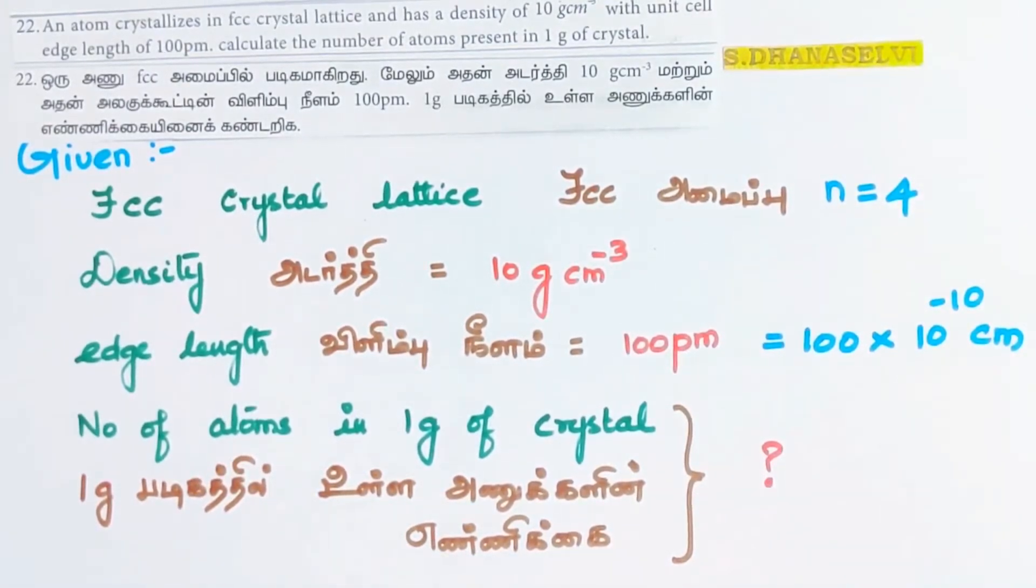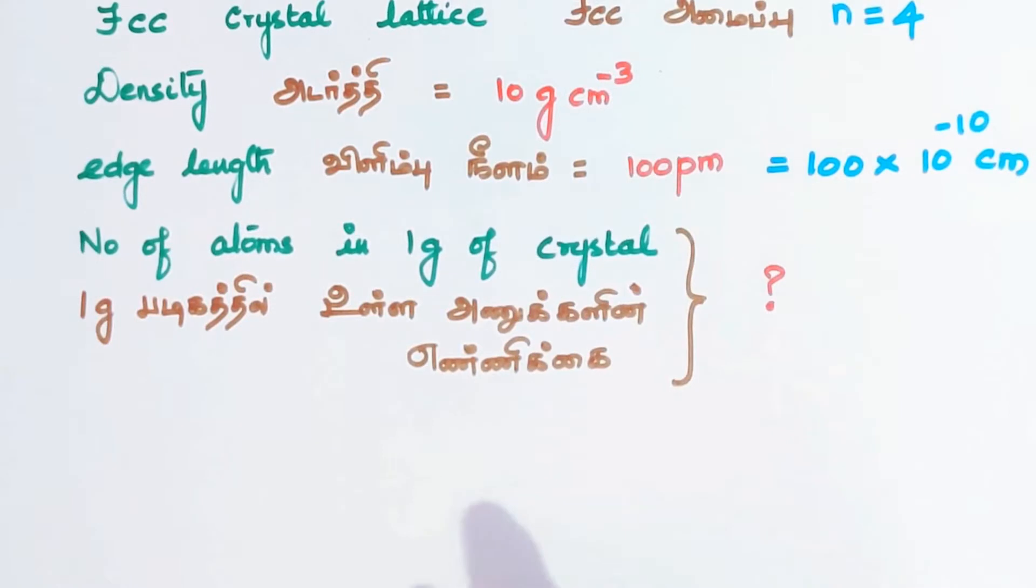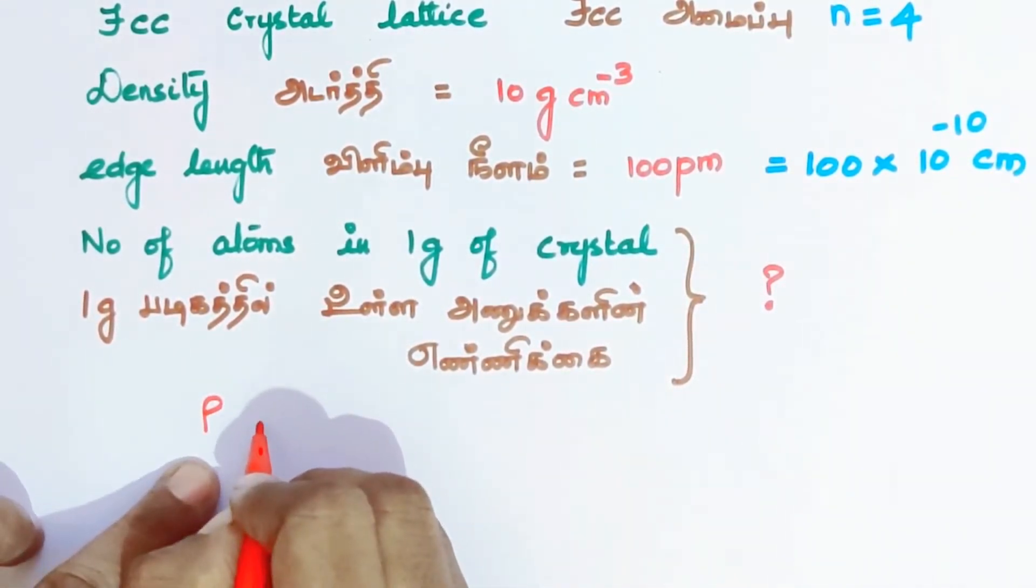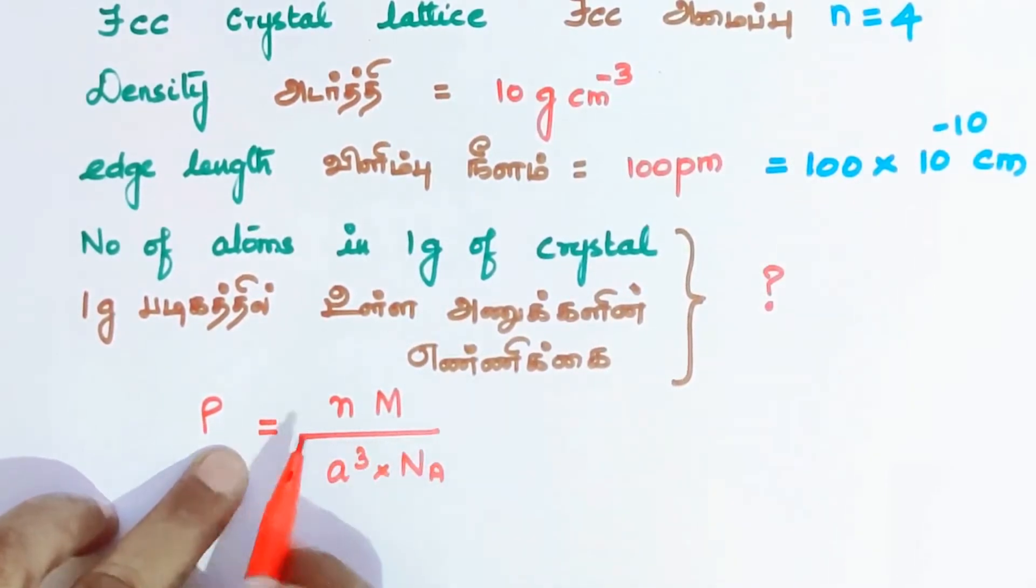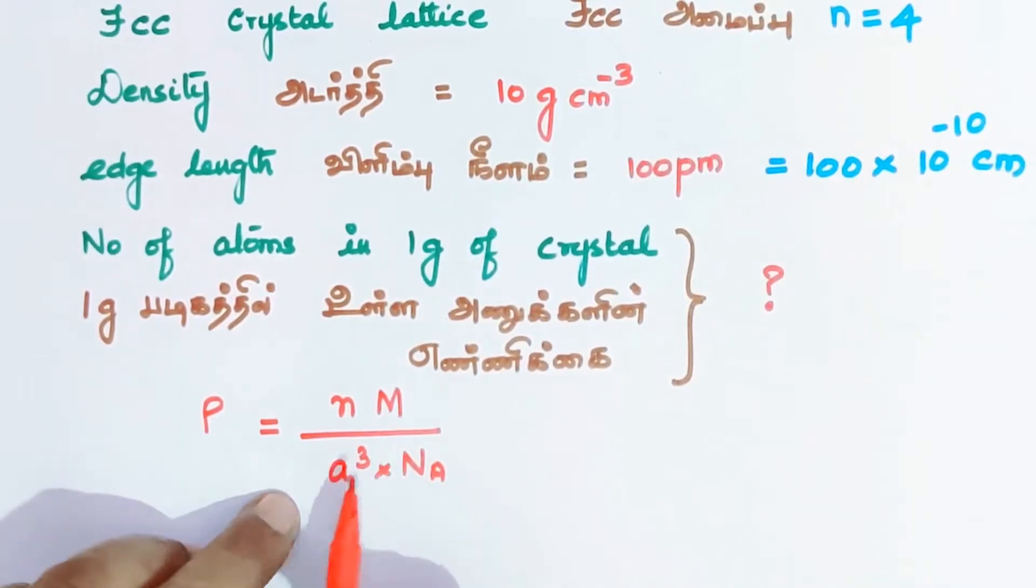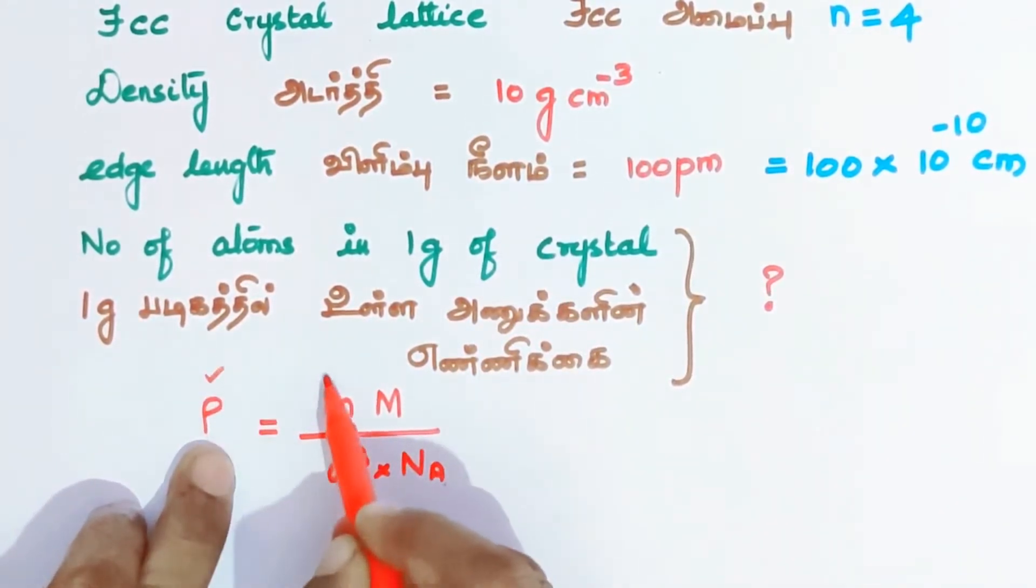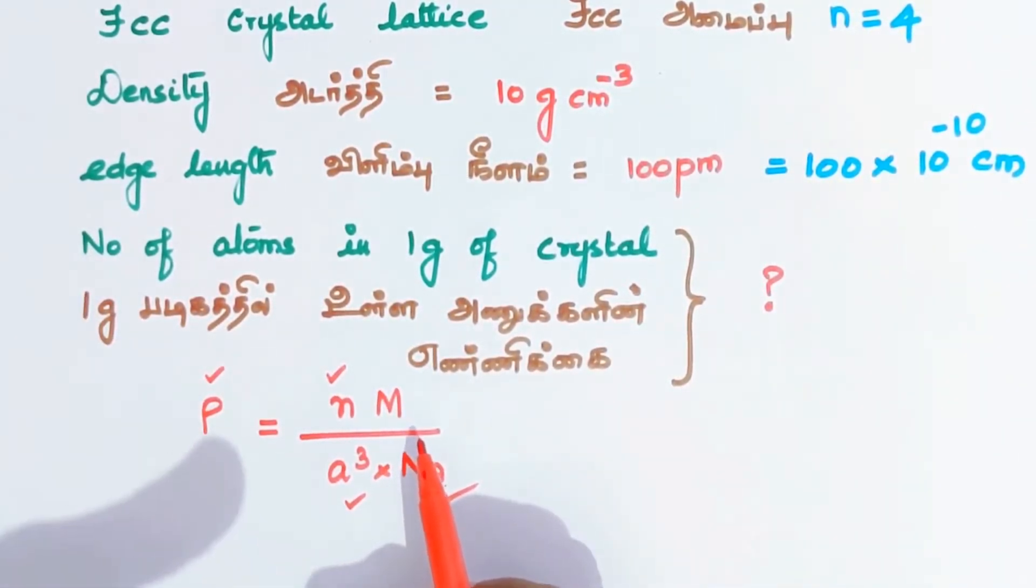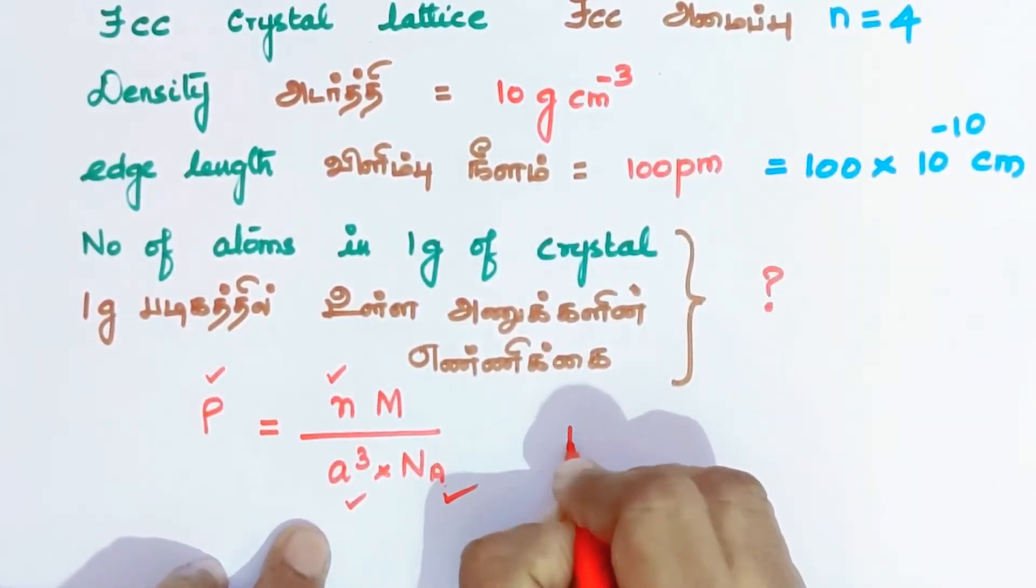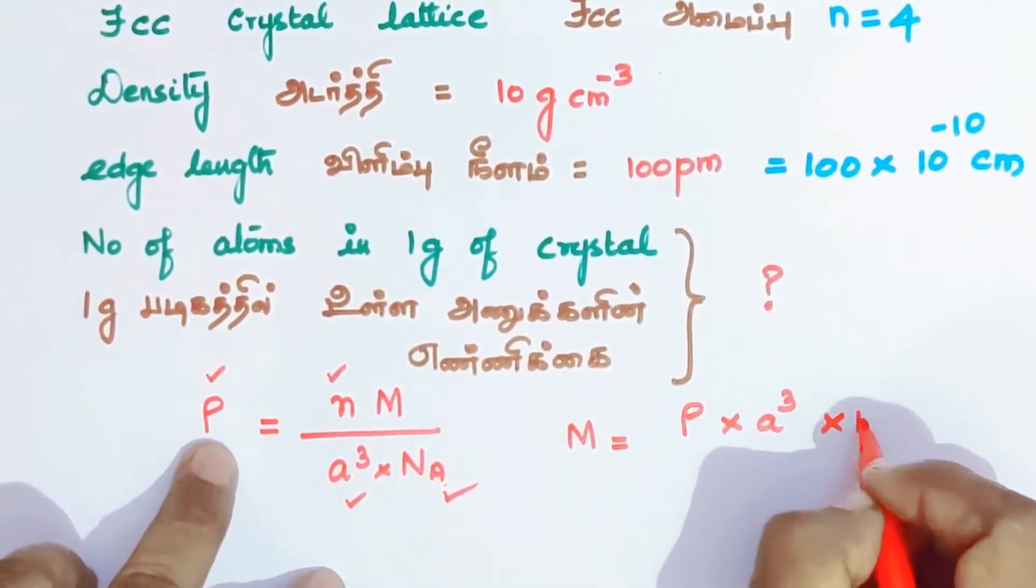The formula for number of atoms in one gram of crystal: density rho equals n M by a cube into N_A, where M is the molar mass and N_A is Avogadro's number. Rearranging, M equals rho times a cube times N_A by n.